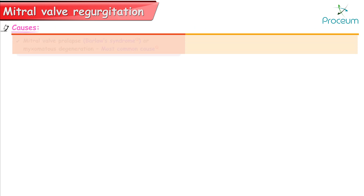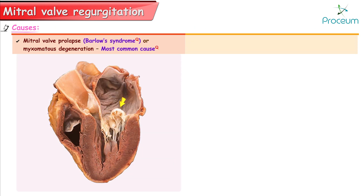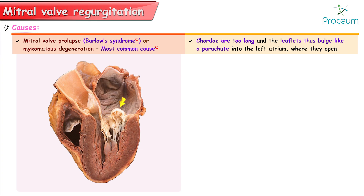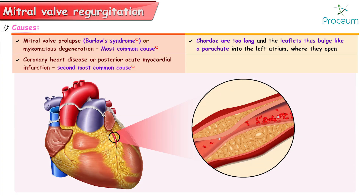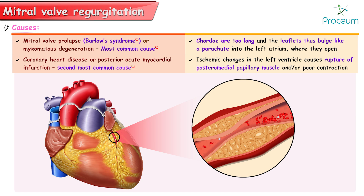Causes. Mitral valve prolapse, or Barlow's syndrome, or myxomatous degeneration, is the most common cause of mitral regurgitation. The chordae are too long and the leaflets thus bulge like a parachute into the left atrium. Coronary heart disease or posterior acute myocardial infarction is the second most common cause. Ischemic changes in the left ventricle cause rupture of the posterior medial papillary muscle, resulting in poor contraction.